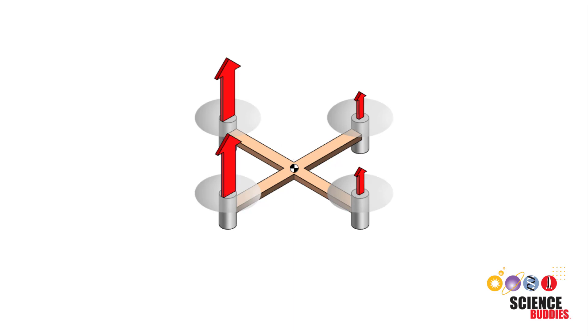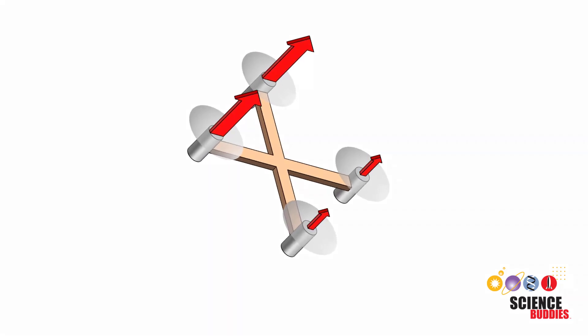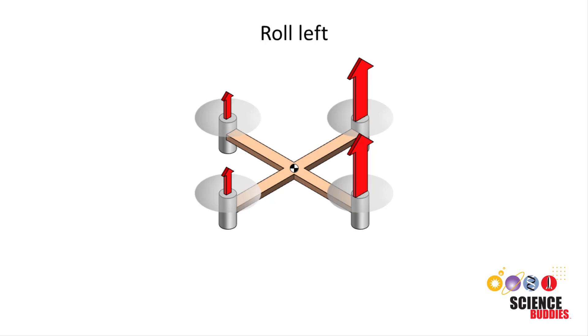When two motors on one side spin faster than the two motors on the opposite side, they generate more lift. This results in a net torque about the center of mass causing the drone to rotate. You can independently control the motors to make the drone roll left, roll right, pitch forward, and pitch backward.